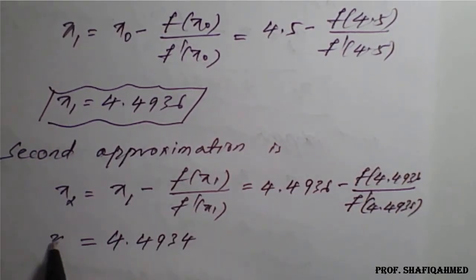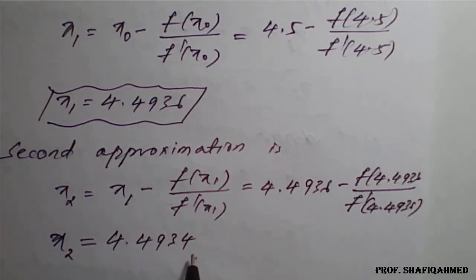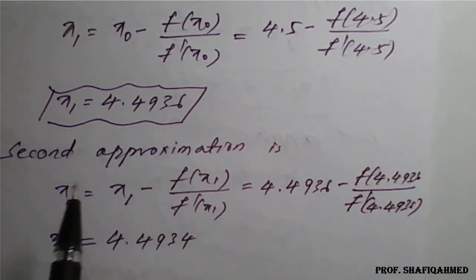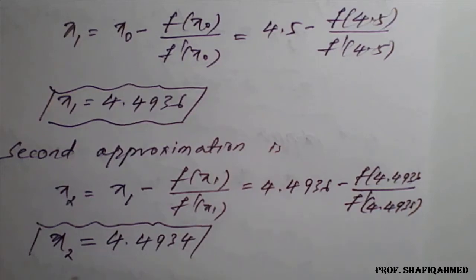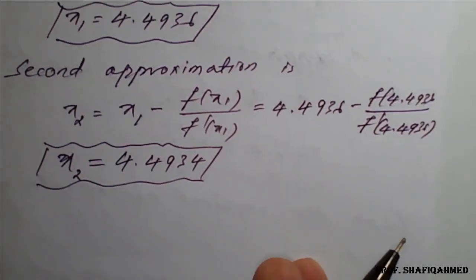The previous one had last two decimals as 36, so 4.4936, and here it is 4.4934. Not accurate yet, so we will go for the third approximation.